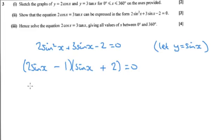So that tells us that sine x is either equal to a half or sine x is equal to negative 2. Sine x never equals negative 2, so we can ignore that solution. That's not a valid solution.